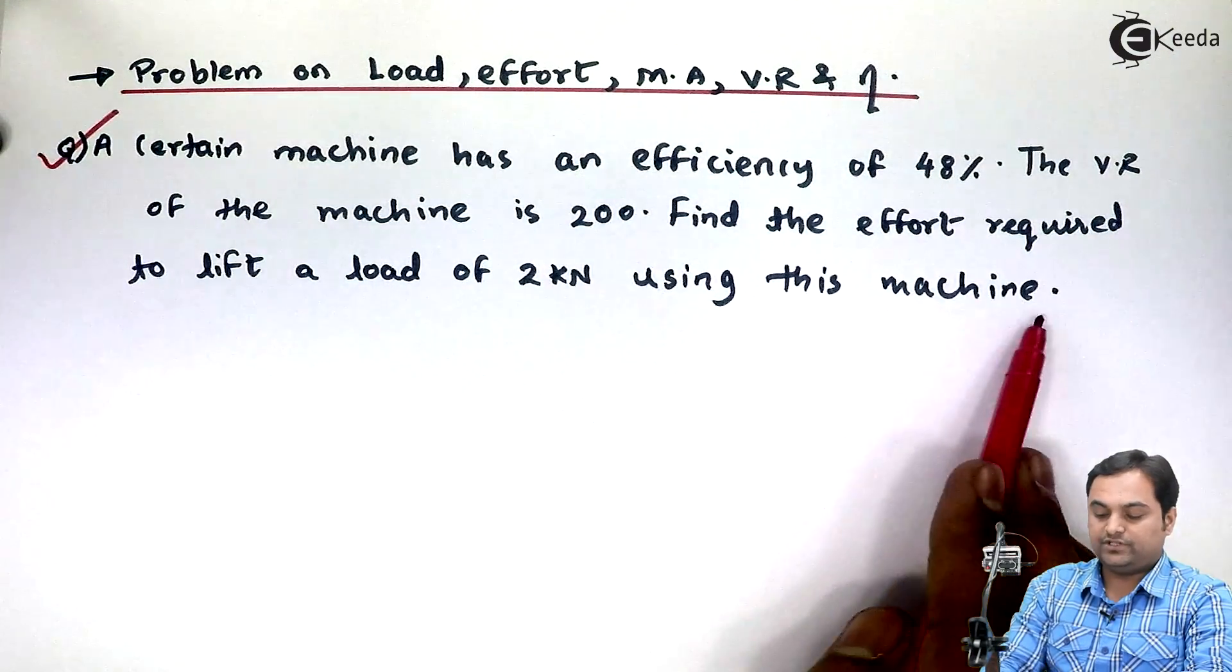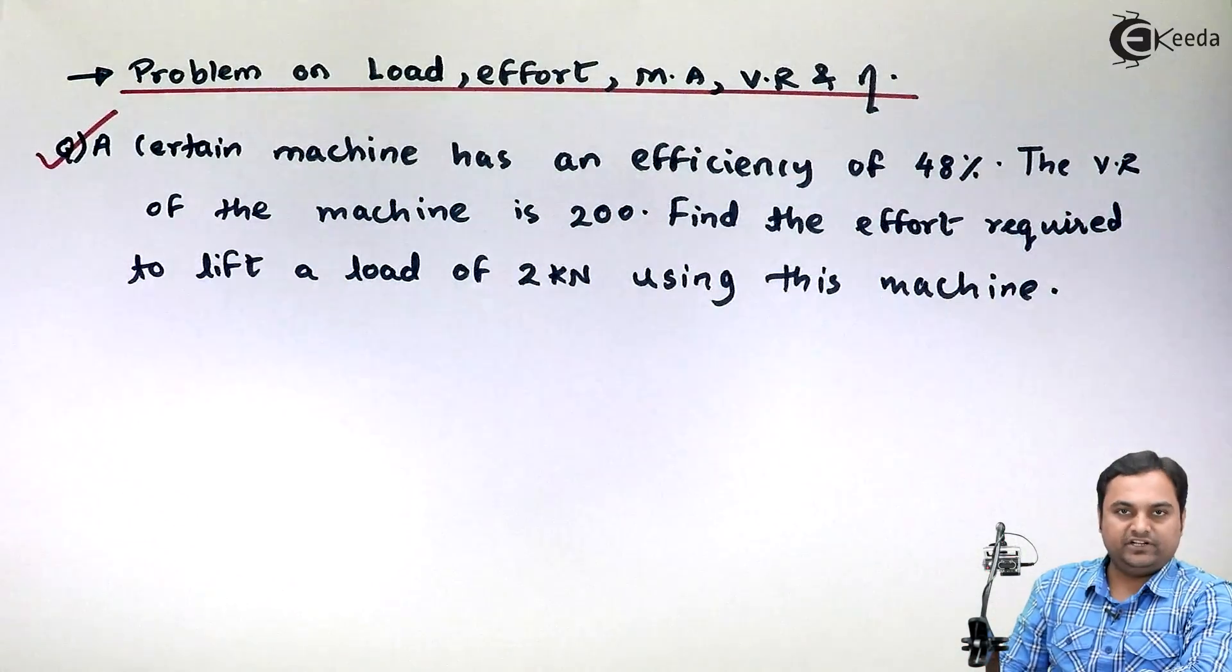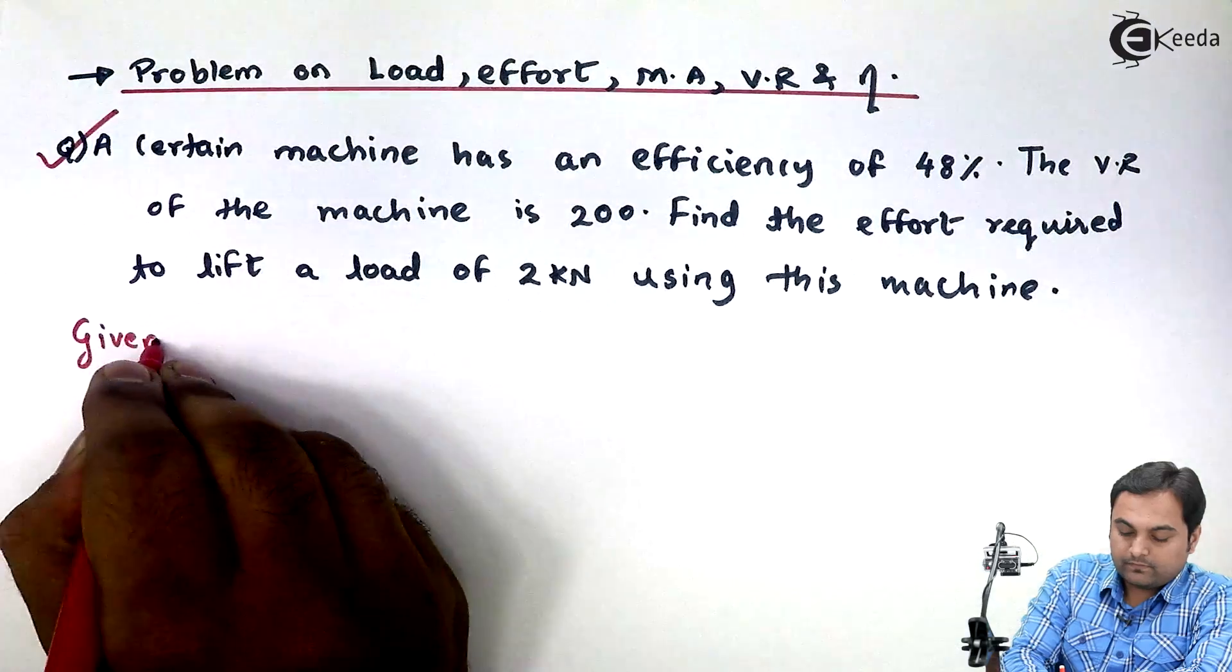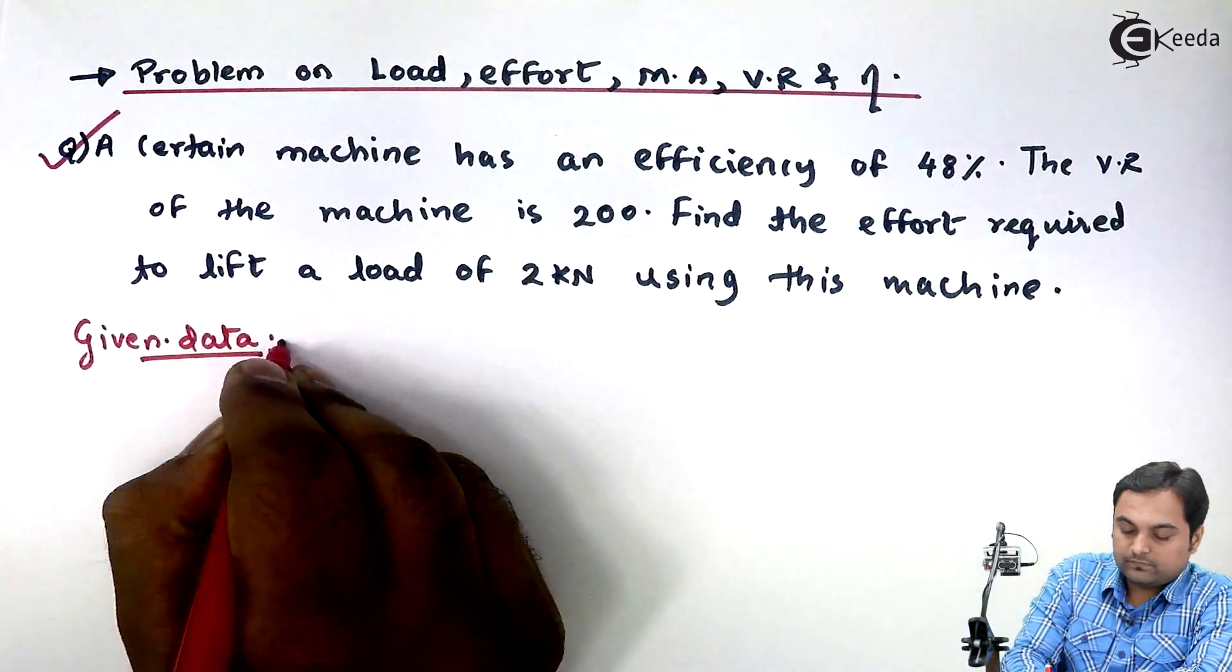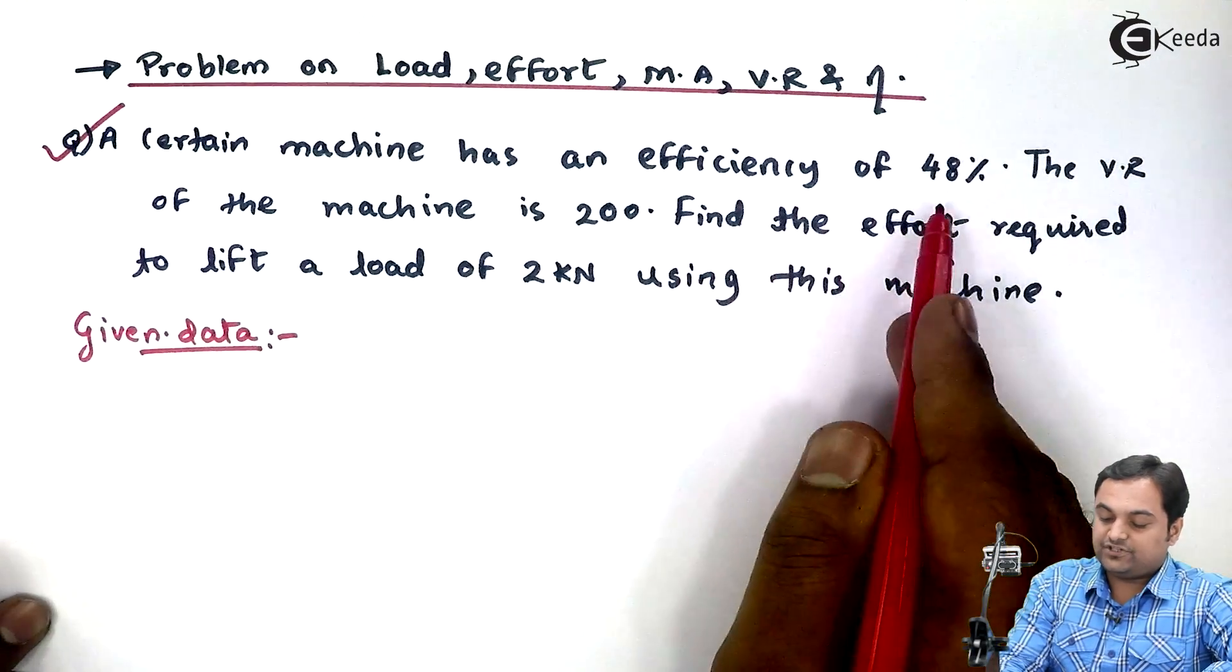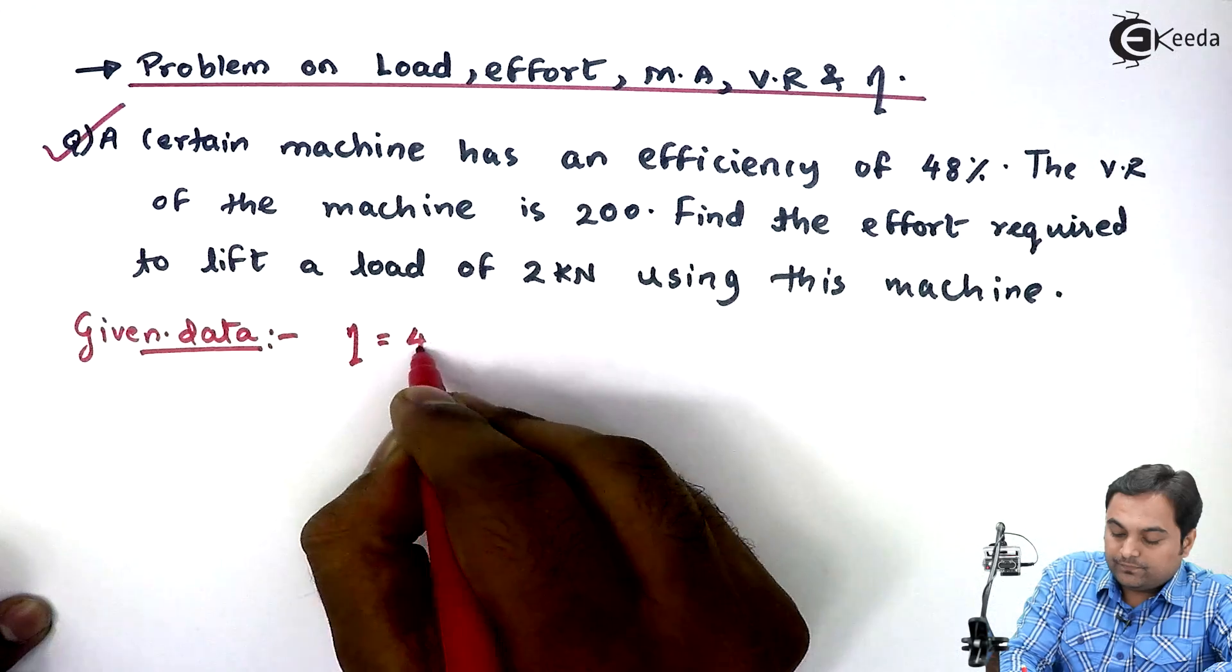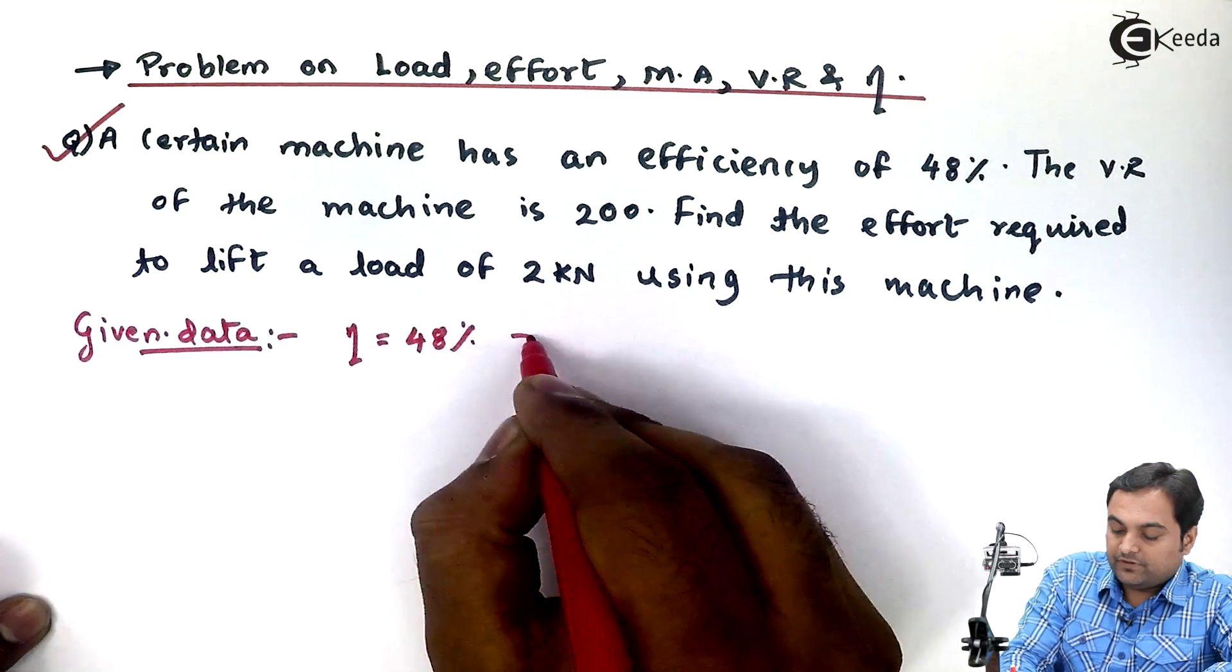Whatever is given here, I will write in the form of data. It is given that a certain lifting machine has an efficiency of 48%, so eta equals 48%, which means it is 0.48.